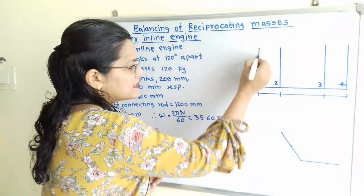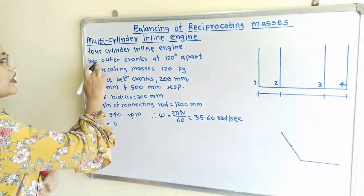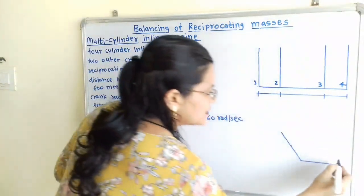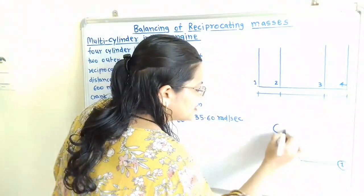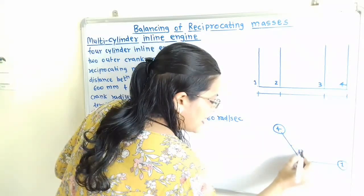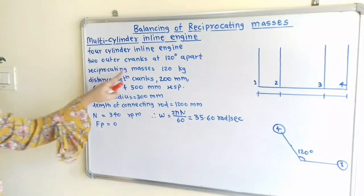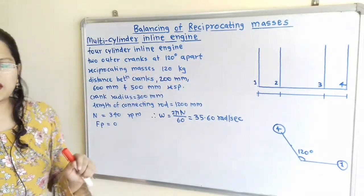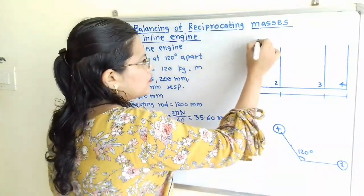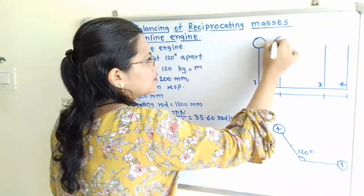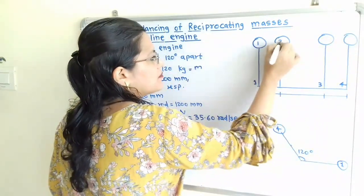It is given that two outer cranks are at 120 degrees apart. These are the outer cranks: crank number 1 and crank number 4. If we consider crank number 1 at 0 degrees, then crank number 4 is at 120 degrees. This is the angular position of these planes. The reciprocating mass is 200 kg, so mass M for all cylinders is to be placed here.